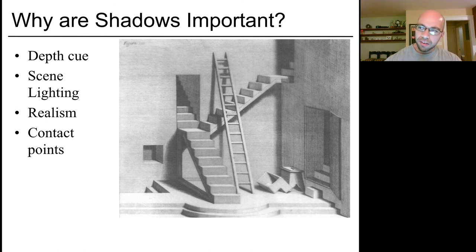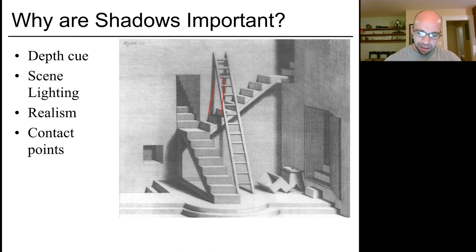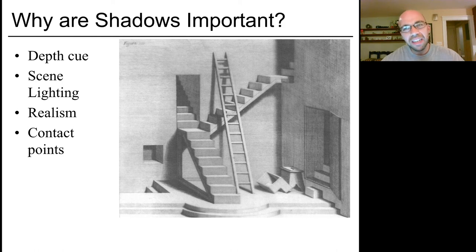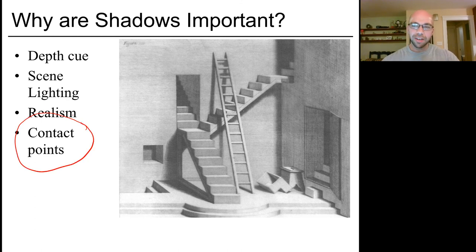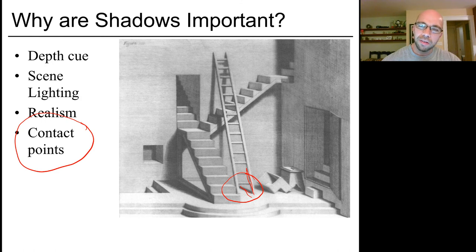Shadows provide an important depth cue. By noticing the shadow underneath the ladder here, we can figure out the rough layering of the different features in this 3D scene. They tell us where the different lights are in the scene, and they suggest a level of realism that we wouldn't have without shadows. Shadows are also important because sometimes they tell us how a scene fits together — they can tell you the contact points between different objects. You can see that the shadow meets up with the bottom of the physical object.